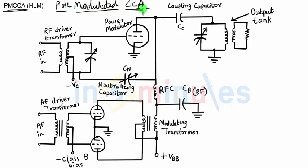The reason is that in Grid Modulated Class C Amplifier, we had given the modulating signal to the grid terminal. In Plate Modulated Class C Amplifier, we are giving the modulating signal to the plate terminal, and that's the reason it is called Plate Modulated Class C Amplifier. In Grid Modulated Class C Amplifier, we give the signal to the grid terminal because the grid terminal voltage or current is always of very small amplitude, like a base terminal signal.